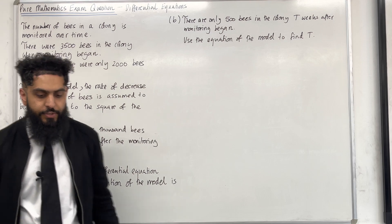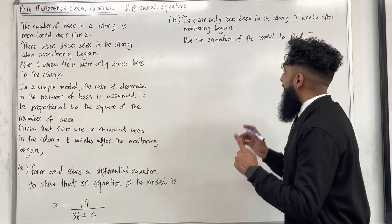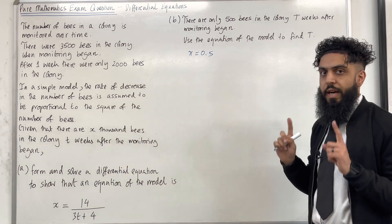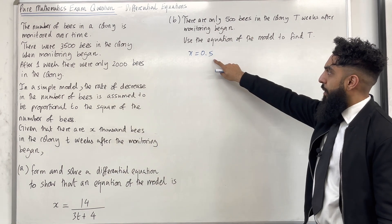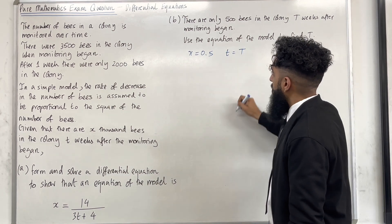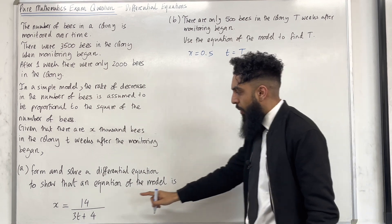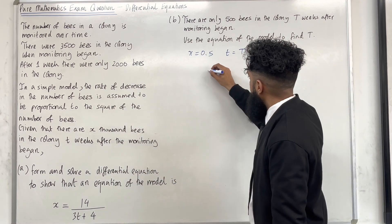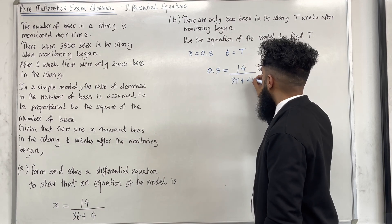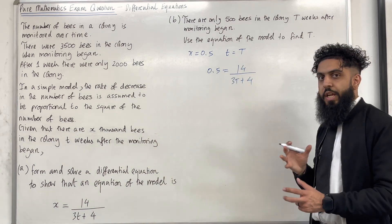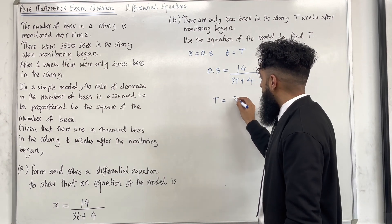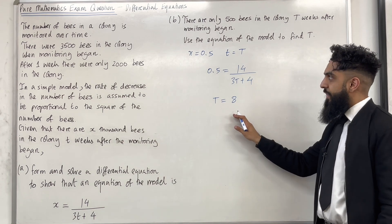Let's have a look at the solution to part B. We know that x is equal to 0.5, since x is the number of bees measured in thousands and 500 bees is equivalent to 0.5. We also know that t equals capital T. Substituting these two quantities into our model, we get 0.5 equal 14 over 3T plus 4. Rearranging and making T the subject, I get T equal 8. So that is the solution to part B.